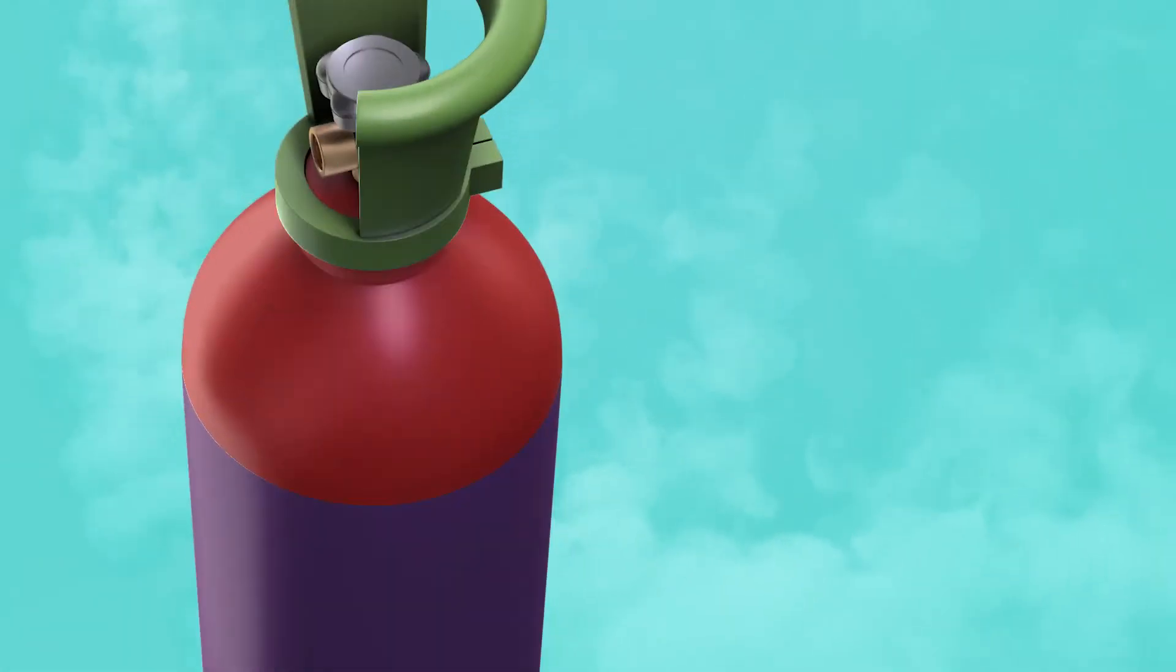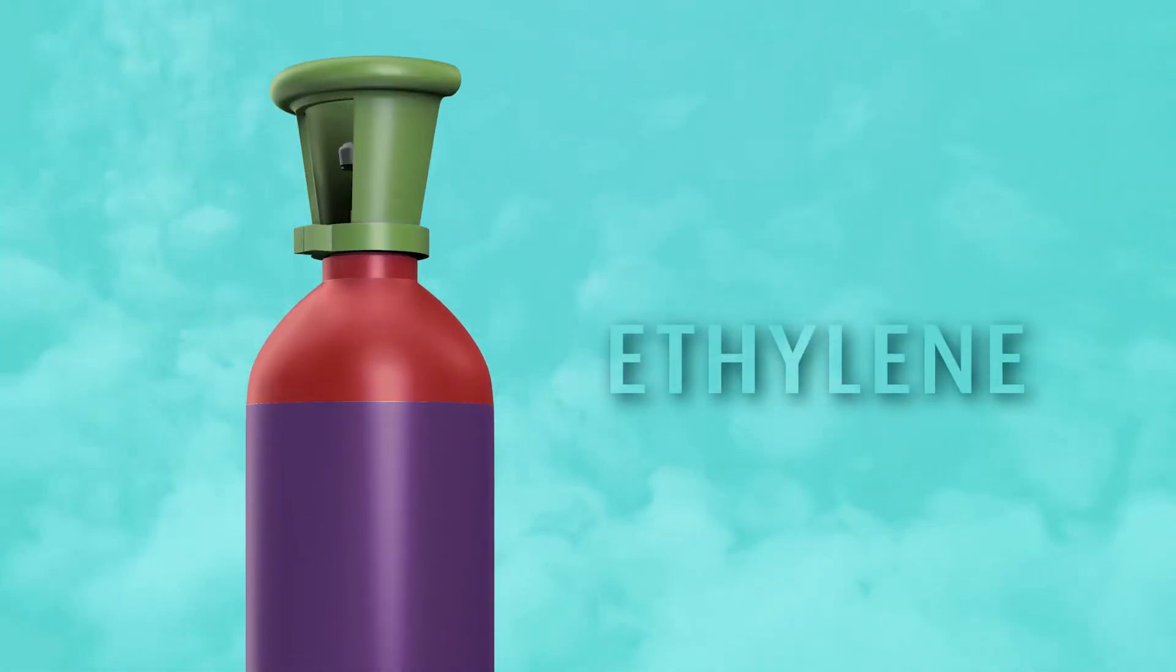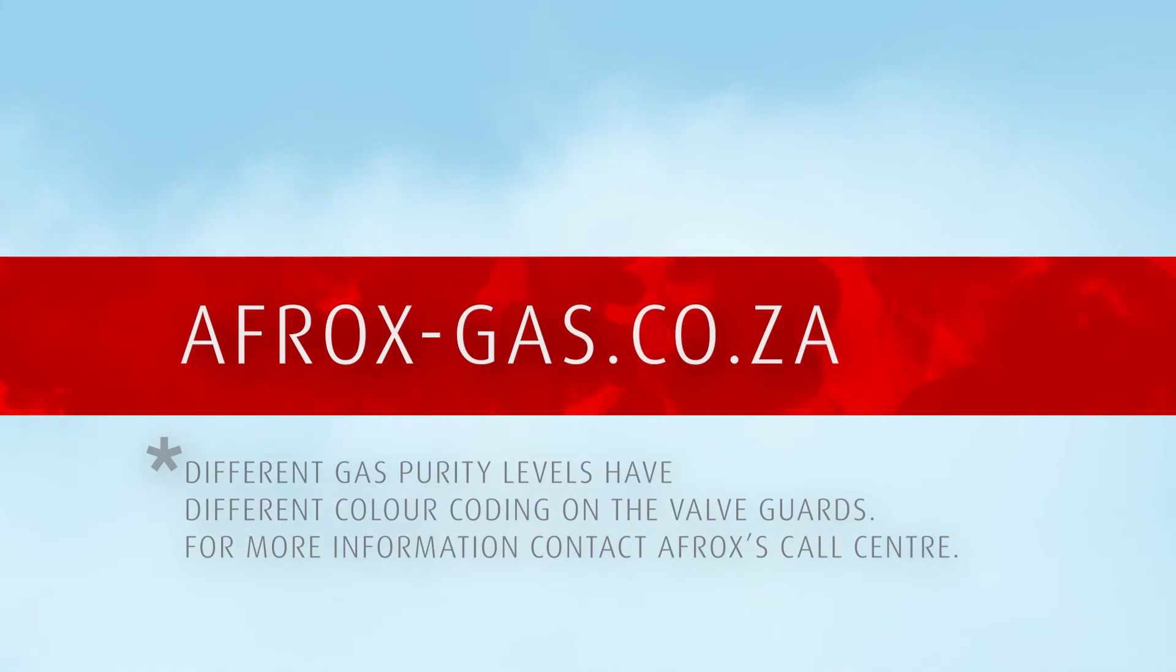Ethylene is available from Afrox in a purple cylinder with a red shoulder and a lime green valve guard. Visit afrox-gas.co.za to explore the best and most cost-effective solution, or contact our call center on 0860 020202.